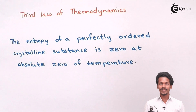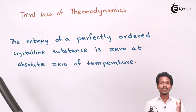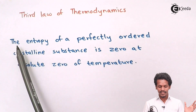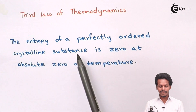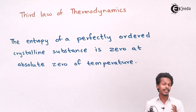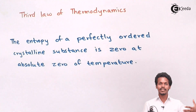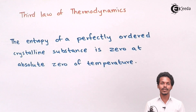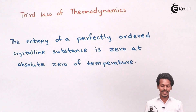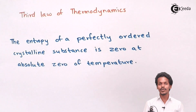This is the statement of the third law of thermodynamics. It clearly states that the entropy of a perfectly ordered crystalline substance is zero at absolute zero temperature, that is, at zero Kelvin.